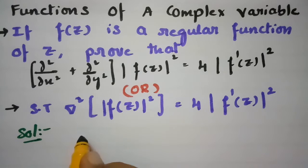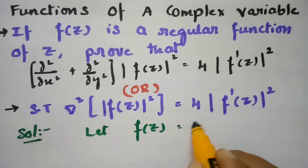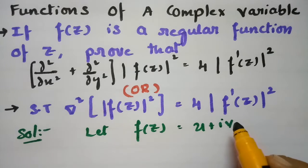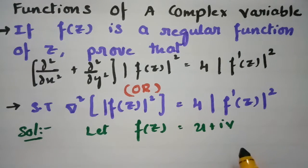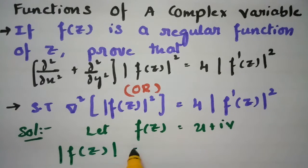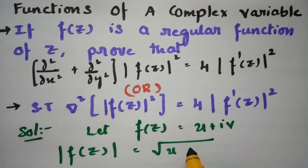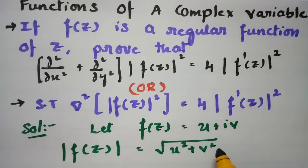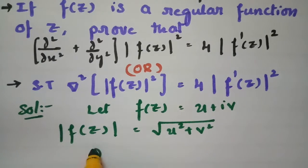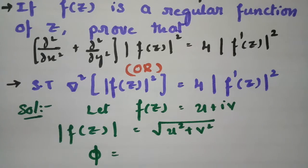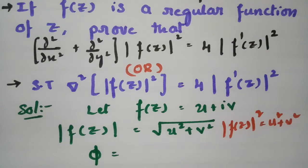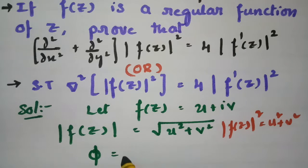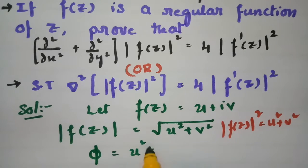Let f(z) = u + iv, which is a regular function. The modulus of f(z) is root over u² + v², and I am considering this as φ. So φ = √(u² + v²), and if I square on both sides, then |f(z)|² = u² + v². Now I am considering φ as u² + v², so this value is nothing but u² + v².